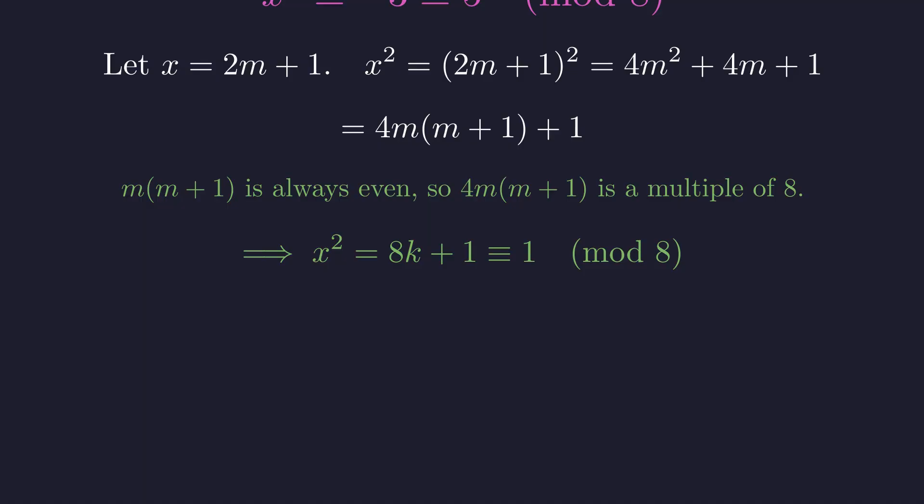Multiplying it by 4 means the term 4m times m plus 1 must be a multiple of 8. This proves a famous result in number theory. The square of any odd number is always congruent to 1 modulo 8.